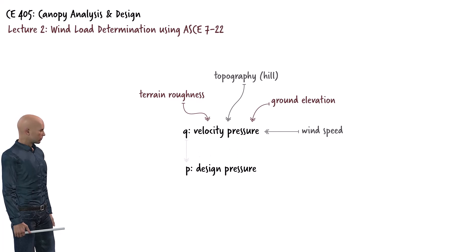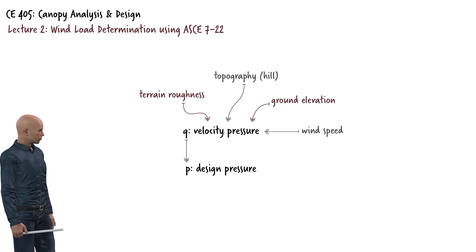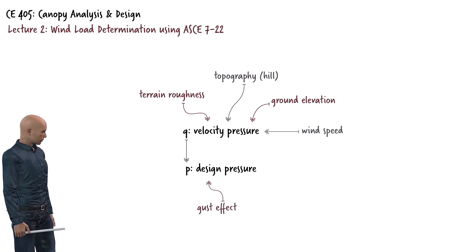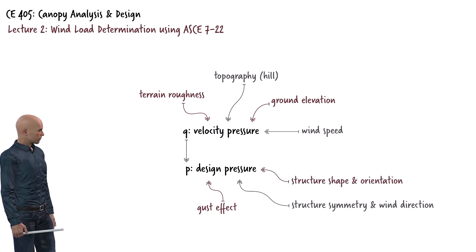Once we have Q, we use it to calculate wind design pressure, P. Wind design pressure takes Q into account but adds other factors related to the structure. These include rigidity — how flexible or rigid the structure is — which affects how gusts amplify wind pressure. Symmetry and wind directionality, the relationship between the structure's symmetry and the wind direction, which influences the design pressure. Also, the shape and orientation of the parts of the structure directly exposed to the wind.